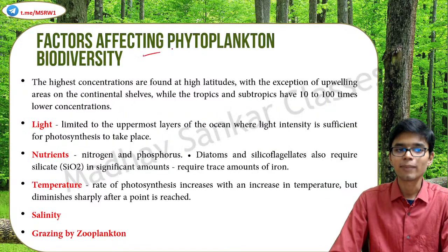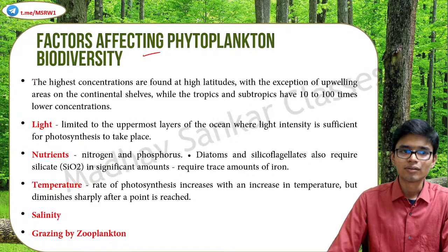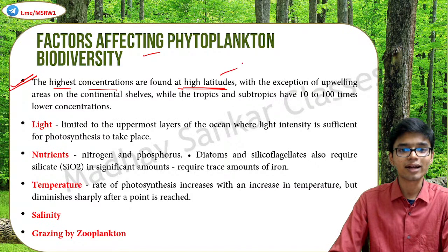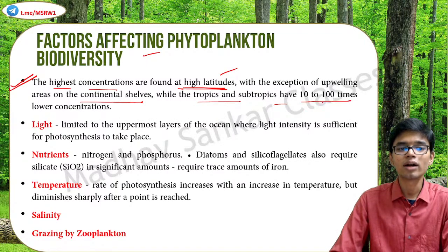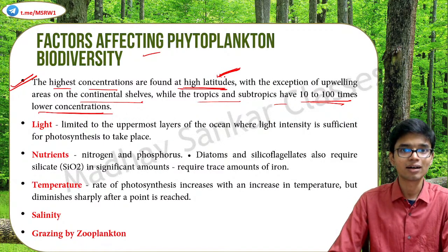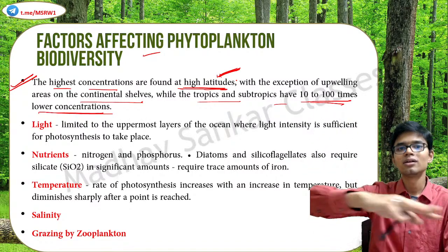The total biomass of phytoplanktons is many times greater than that of total plants on land, and they serve as pasture grounds in aquatic environments. Regarding factors affecting phytoplankton biodiversity - an important point is that the highest concentrations of phytoplanktons are found in high latitudes, not in the tropics or subtropics, with the exception of upwelling areas of continental shelves. The tropics and subtropics have 10 to 100 times lower concentrations. The factors affecting phytoplankton biodiversity are light, nutrients mainly nitrogen and phosphorus, temperature, salinity, and grazing by zooplanktons.